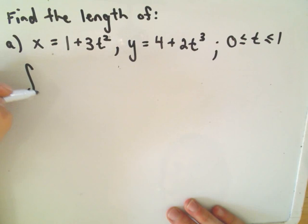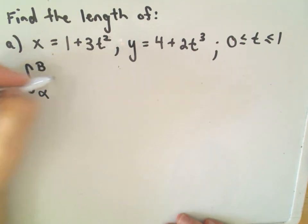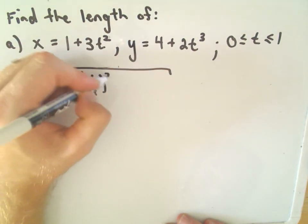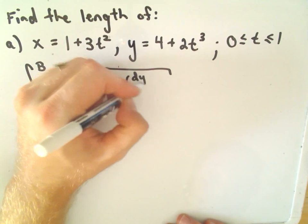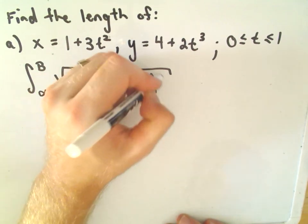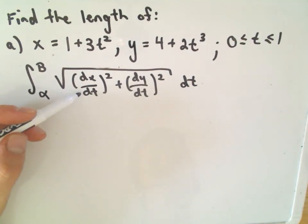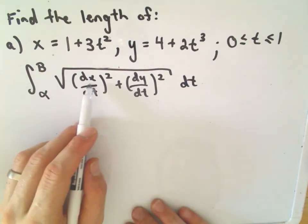So okay, so a couple things. So the formula again is alpha to beta dx dt squared plus dy dt squared, and we integrate with respect to t. So certainly we're going to have to take the derivative both with respect to t for x and for y.